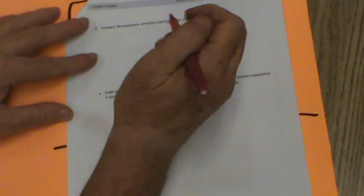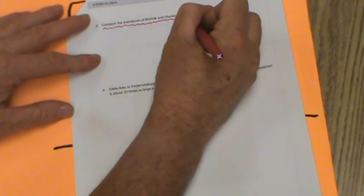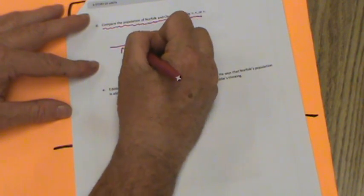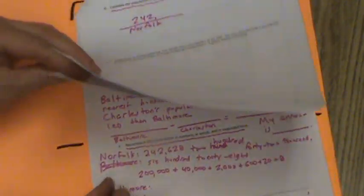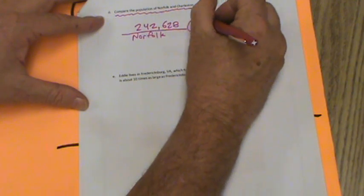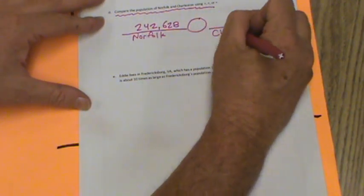You're going to have to look back, compare the population of Norfolk and Charleston using greater than, less than, or equal. So, you're going to put your number here. They gave us the population of Norfolk, so you could put 242,628. And is that greater than, less than, or equal to Charleston's population?